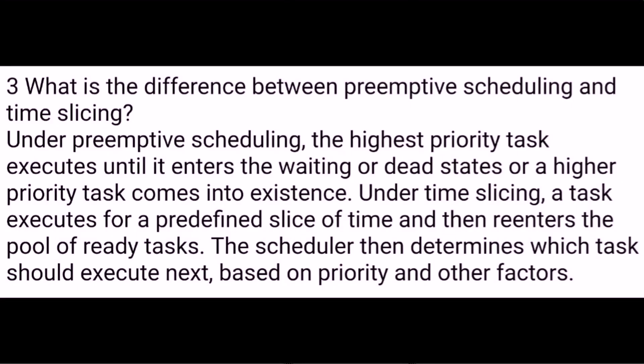What is the difference between Preemptive Scheduling and Time Slicing? Under Preemptive Scheduling, the highest priority task executes until it enters the waiting or dead state, or a higher priority task comes into existence. Under Time Slicing, a task executes for a predefined slice of time and then re-enters the pool of ready tasks. The scheduler then determines which task should execute next based on priority and other factors.